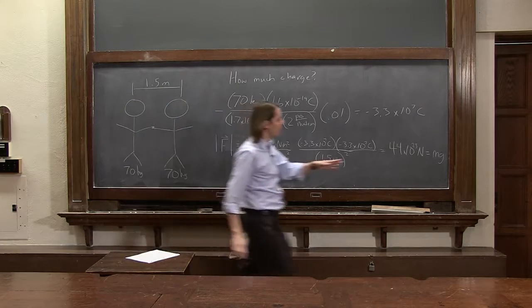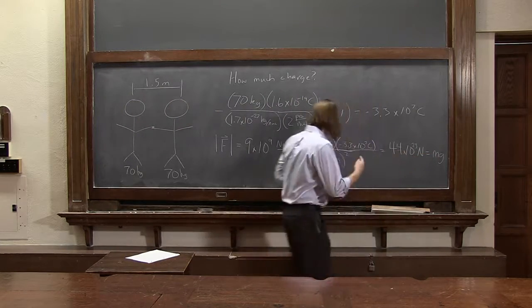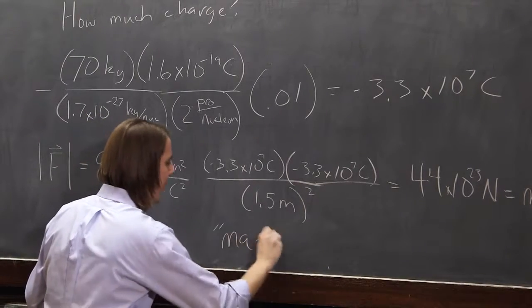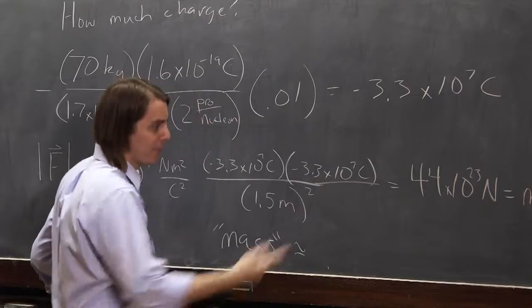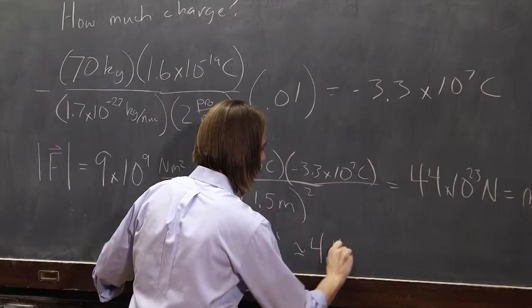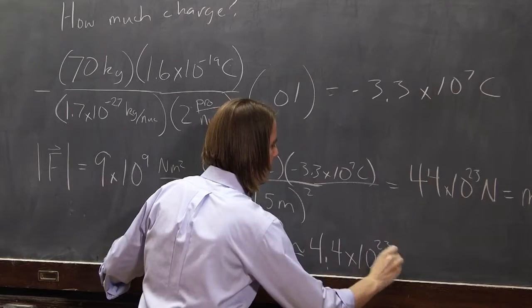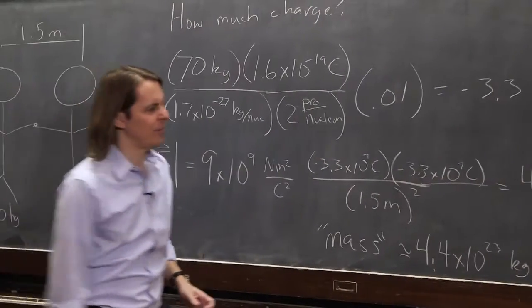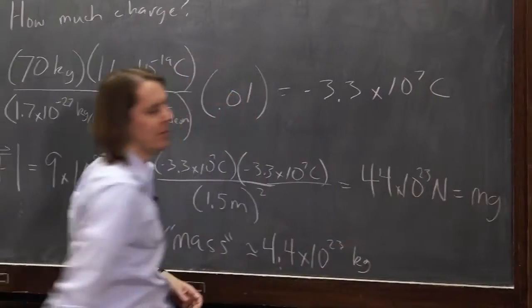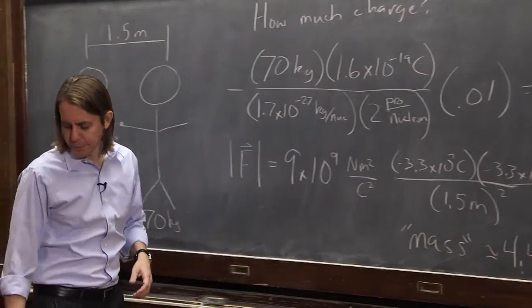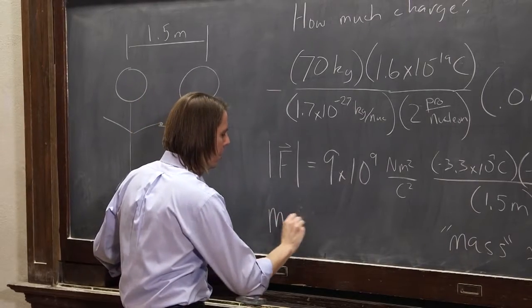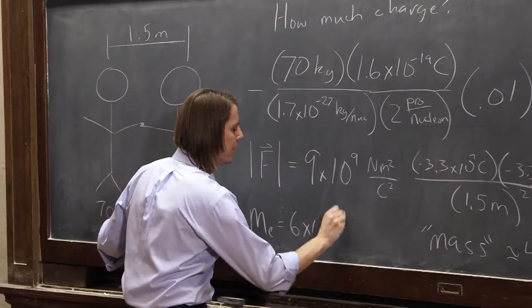And you can see, g is more or less 10. So the mass that we're calculating is going to be about 4.4 times 10 to the 23rd kilograms. So I just divided basically by 10. Put the decimal point there. Well, the mass of the Earth is 6 times 10 to the 24 kilograms.